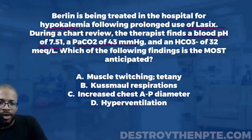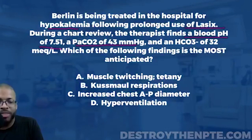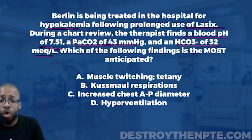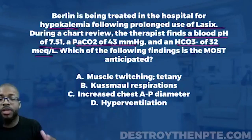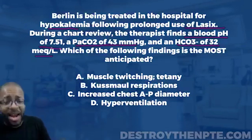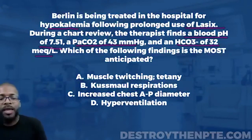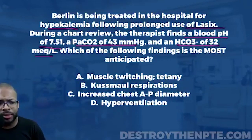The HCO3, also known as bicarbonate, is 32 mEq/L. Normal range, per the Ellen Hillegas textbook, is 22 to 28 mEq/L. A value of 32 is way too high, so there is some type of problem with the metabolic system. Bicarbonate is regulated by the kidneys, so the high bicarbonate tells me there is something going on metabolically.